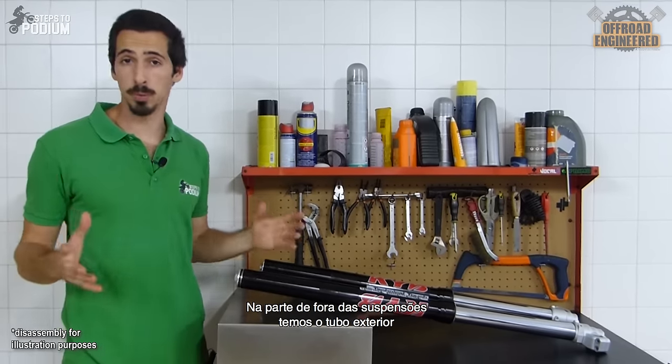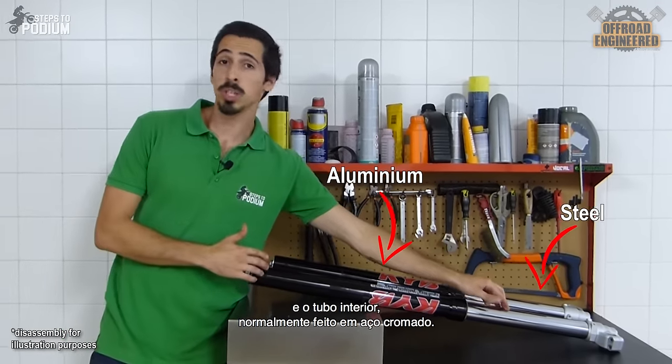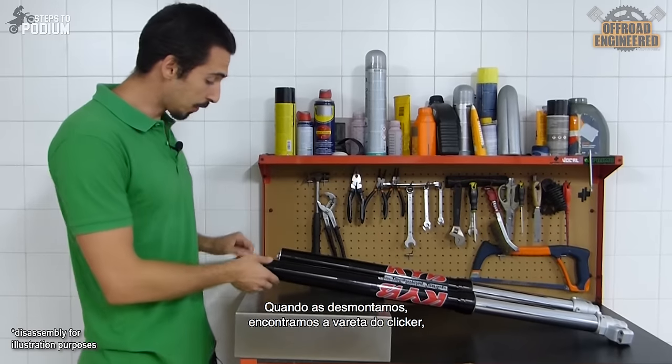On the outside of the front forks you have the outer tube and the inner tube usually made of chromed steel. If you take it apart...